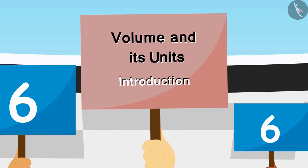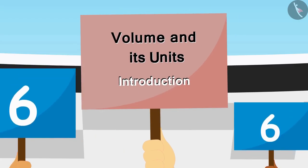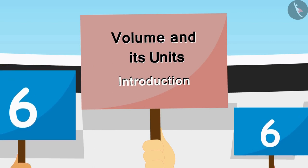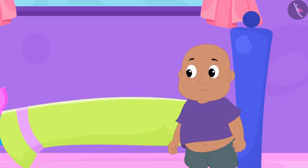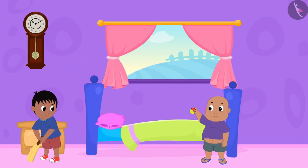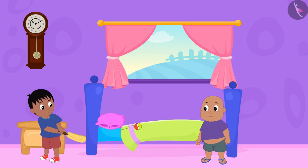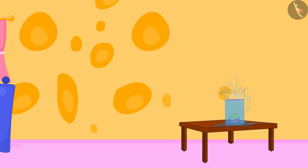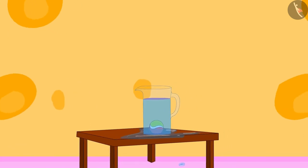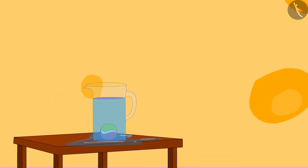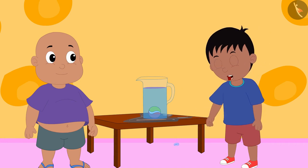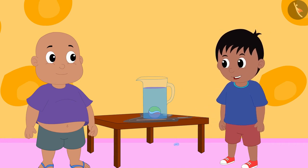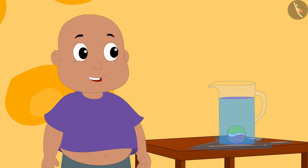Hello kids! In this video we will learn about volume and its units. Raju and Bablu are playing cricket at Raju's house. Raju swung his bat and the ball went straight and fell into a jug which was completely filled with water. Bablu said, let us take the ball out of this jug or else mother will scold me a lot.